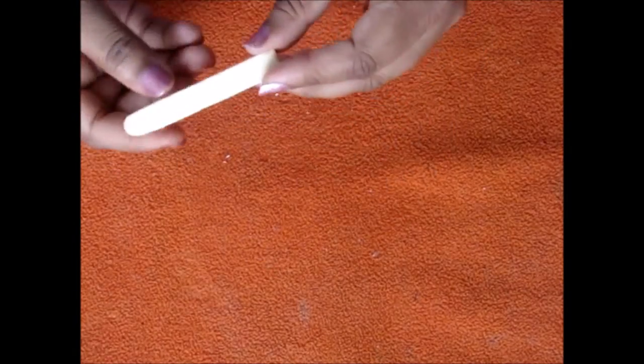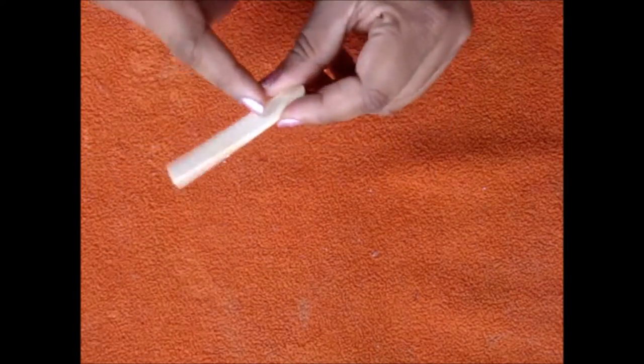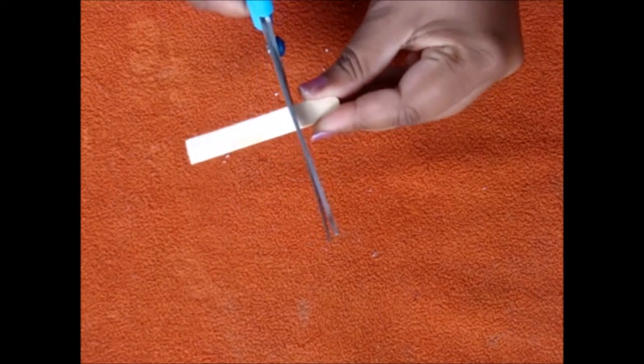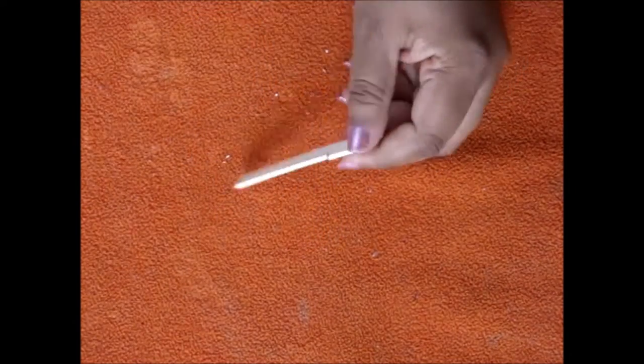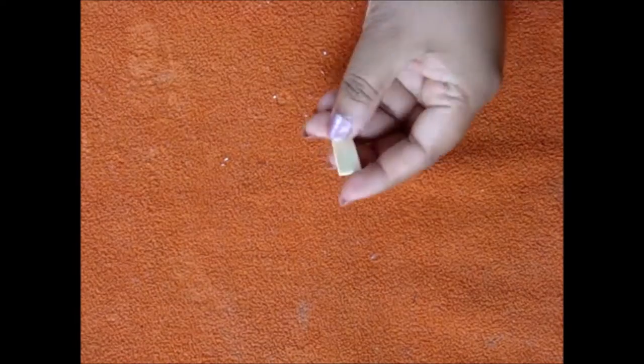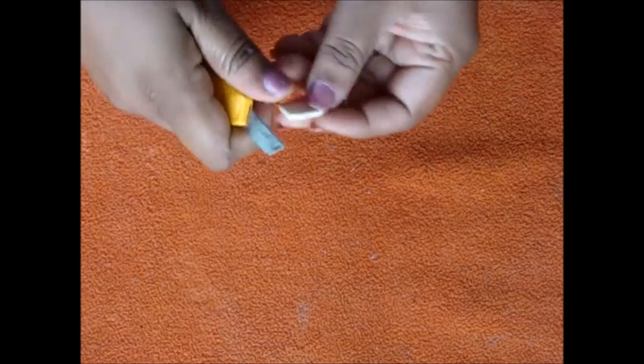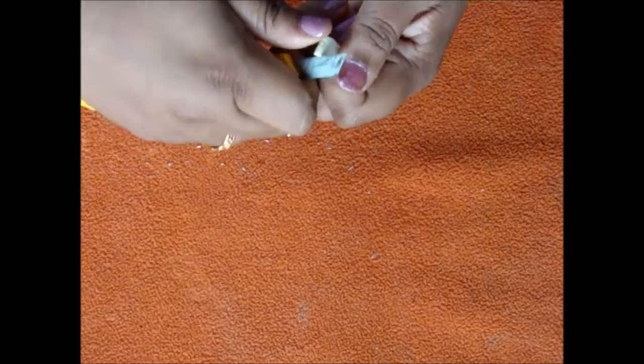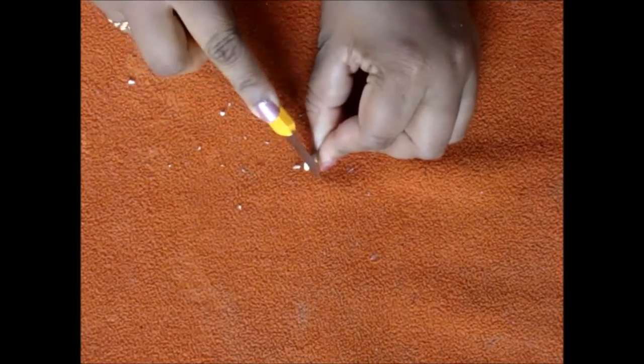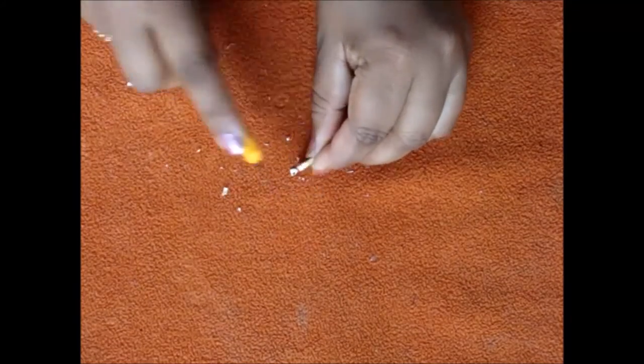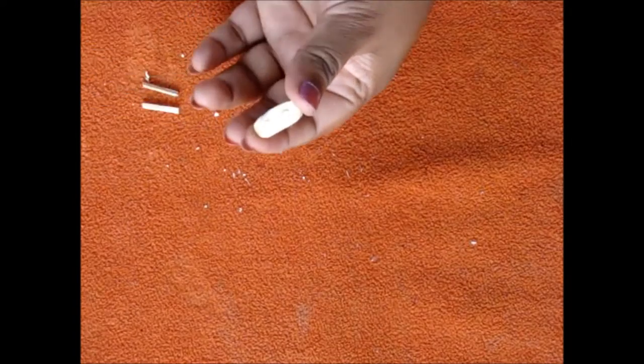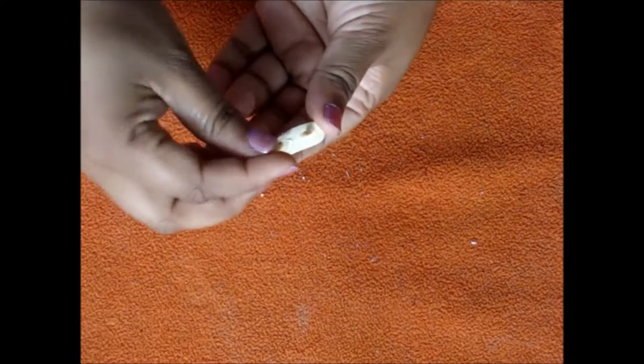Now take a popsicle stick and use the curved edge and cut around two centimeters. With the help of a cutter or a filer file it in a curved way. Make a table top. Dab two drops of hot glue and attach the bottom legs.